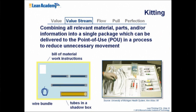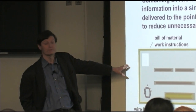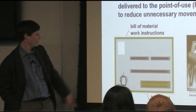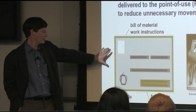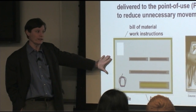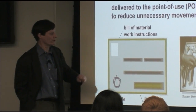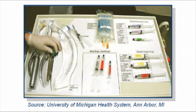Here are some tools at the value stream level to help. One is called kitting — the active version of 5S. If we need to move materials to the place of work, why not move them laid out the way they're going to be used? Here's an aerospace example: if you have a complicated mechanical assembly that uses lots of tubes and wires, why not deliver all the tubes and wires you need in a box where they're laid out nice and easy for the workers? Likewise, for a medical procedure, having everything laid out nice and neat is good practice — but why isn't that standard practice everywhere?